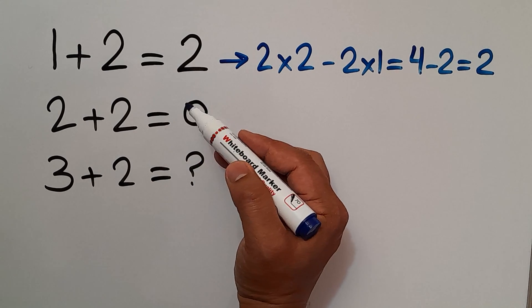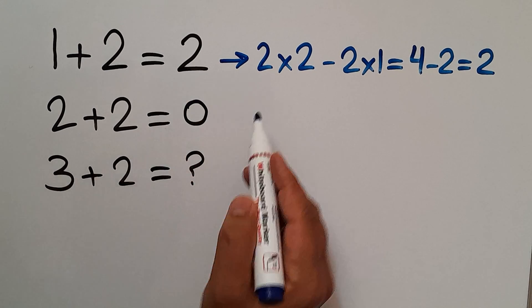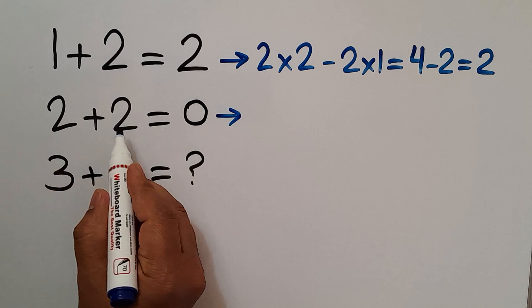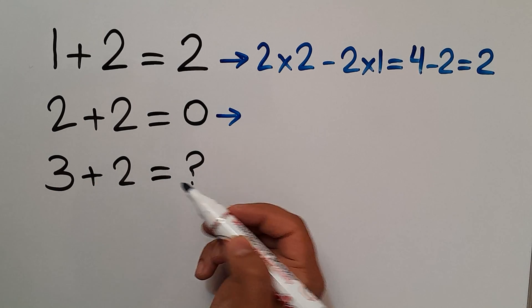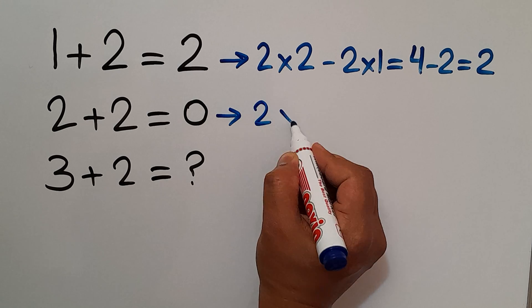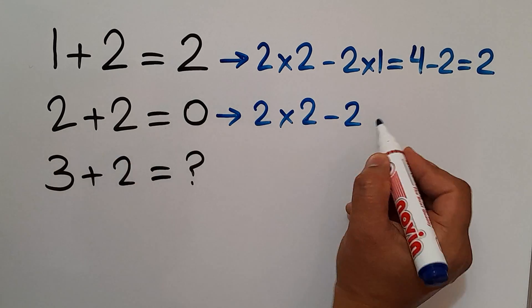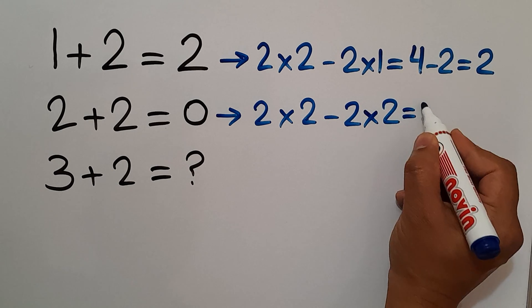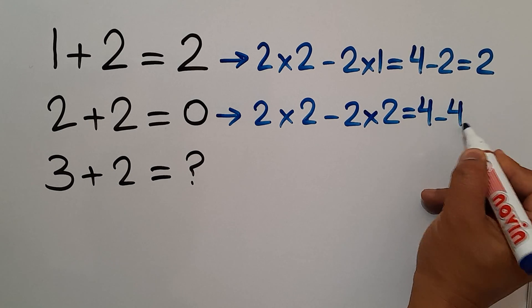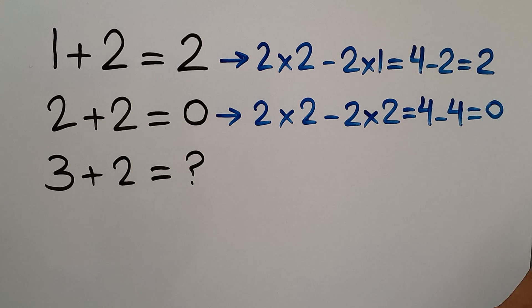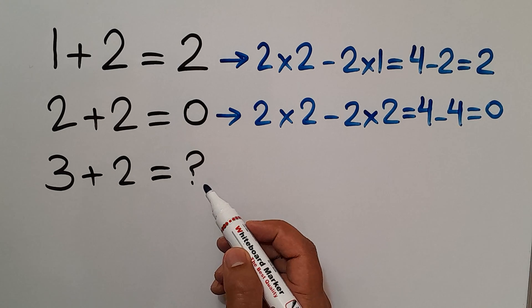And in the second line, we have 2, 2, and 0. 2 times 2 minus 2 times 2 equals 4 minus 4, which equals 0, the right-hand side number.